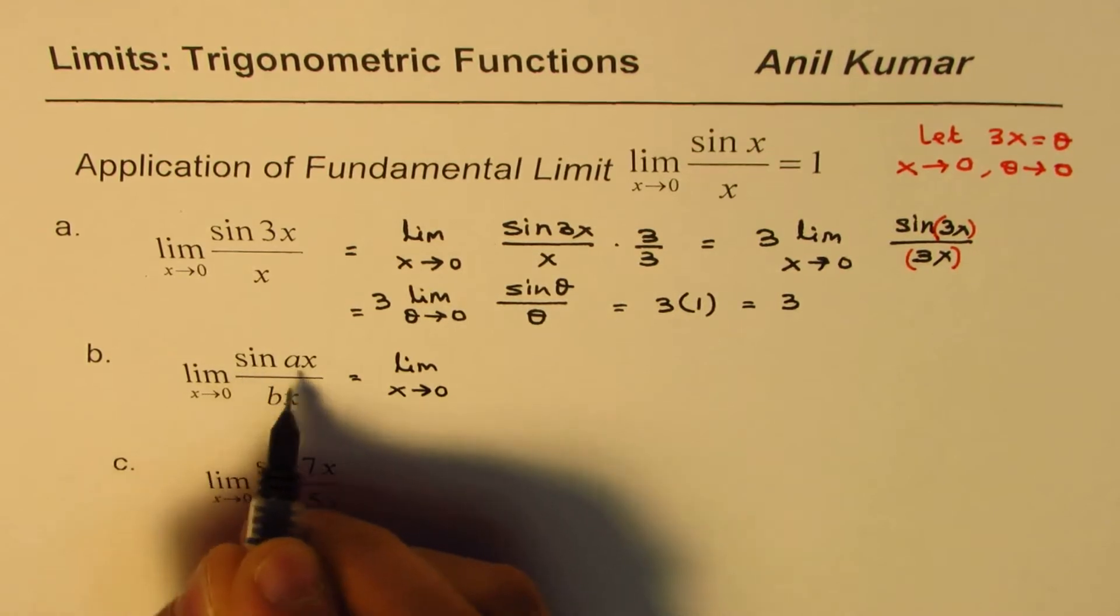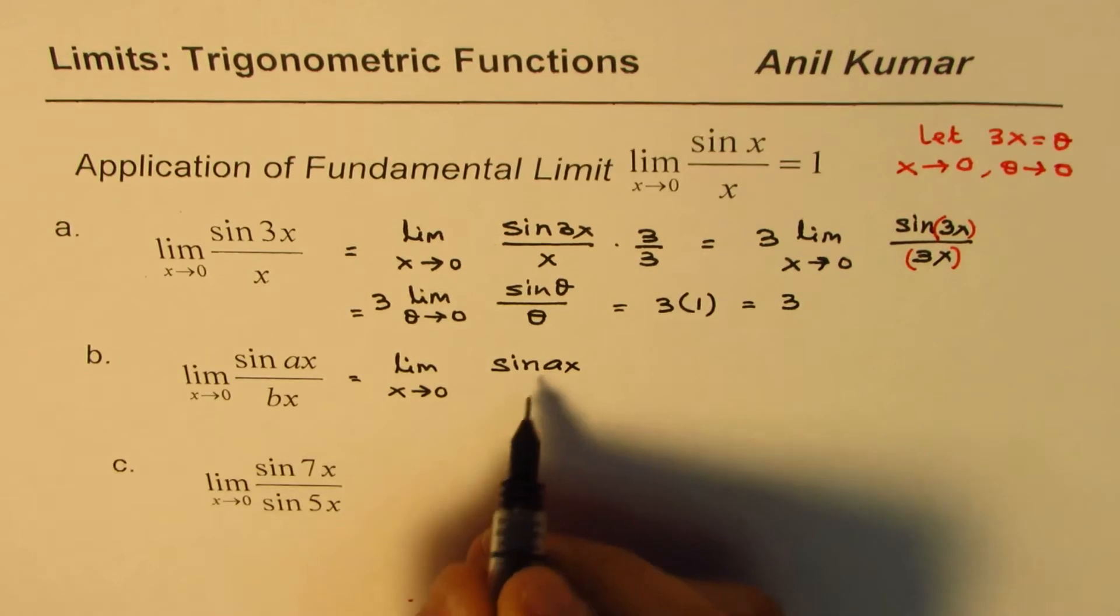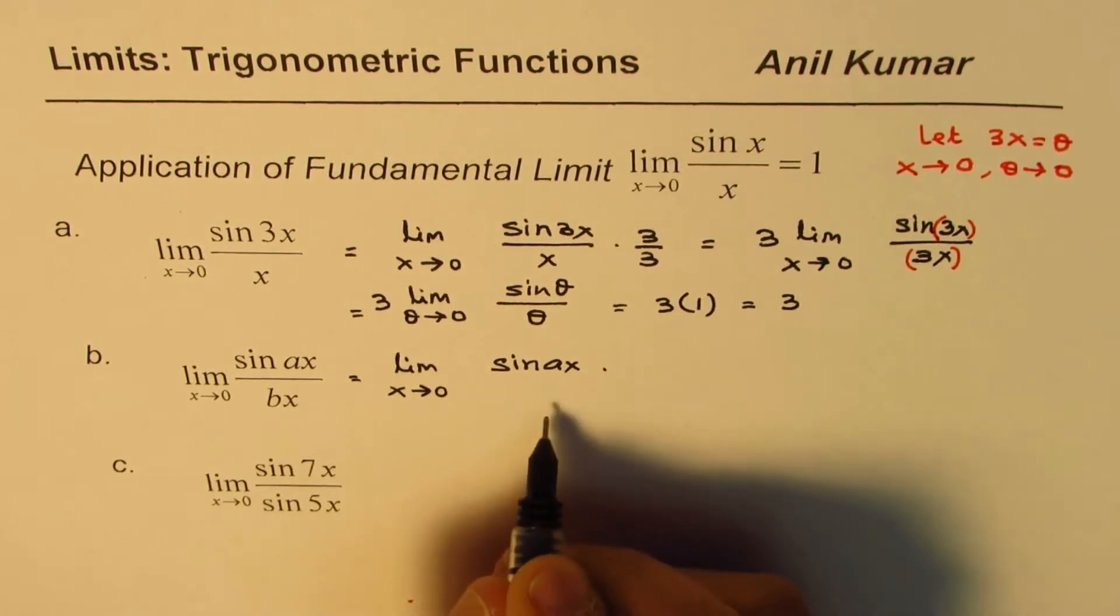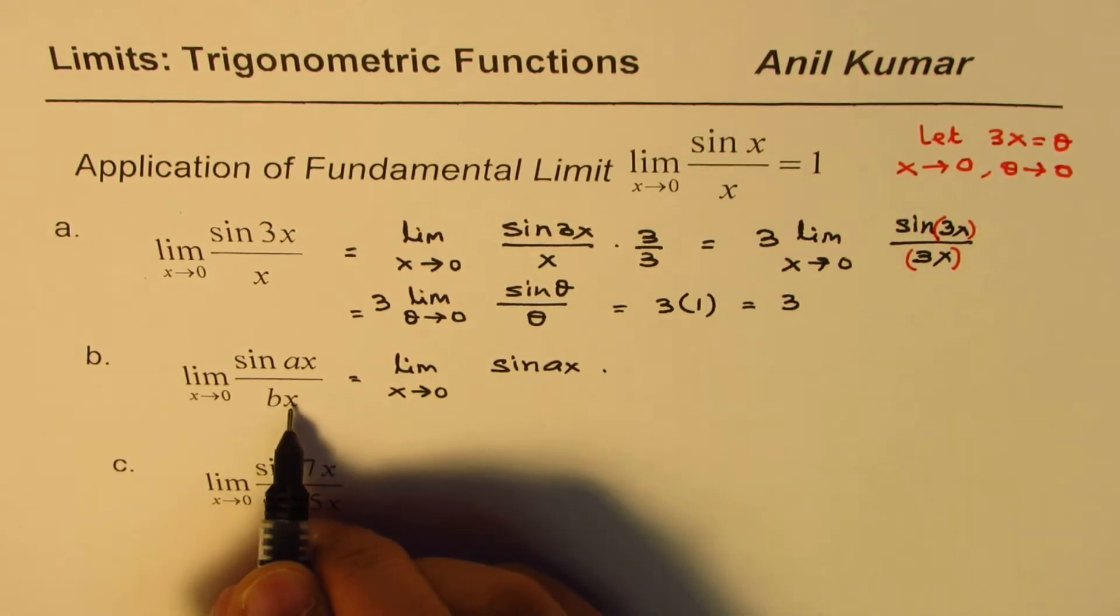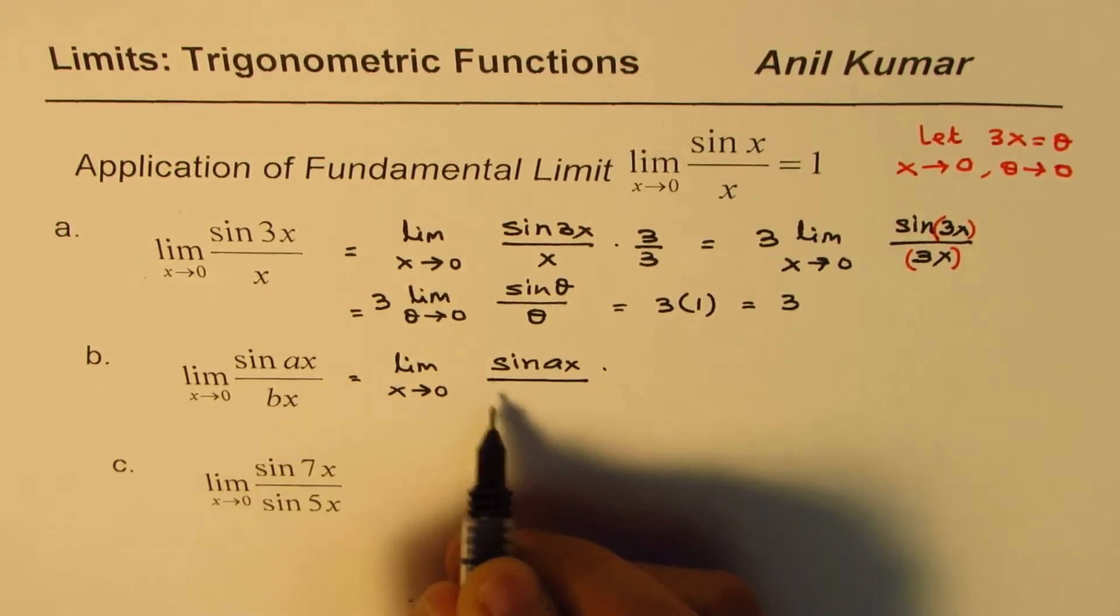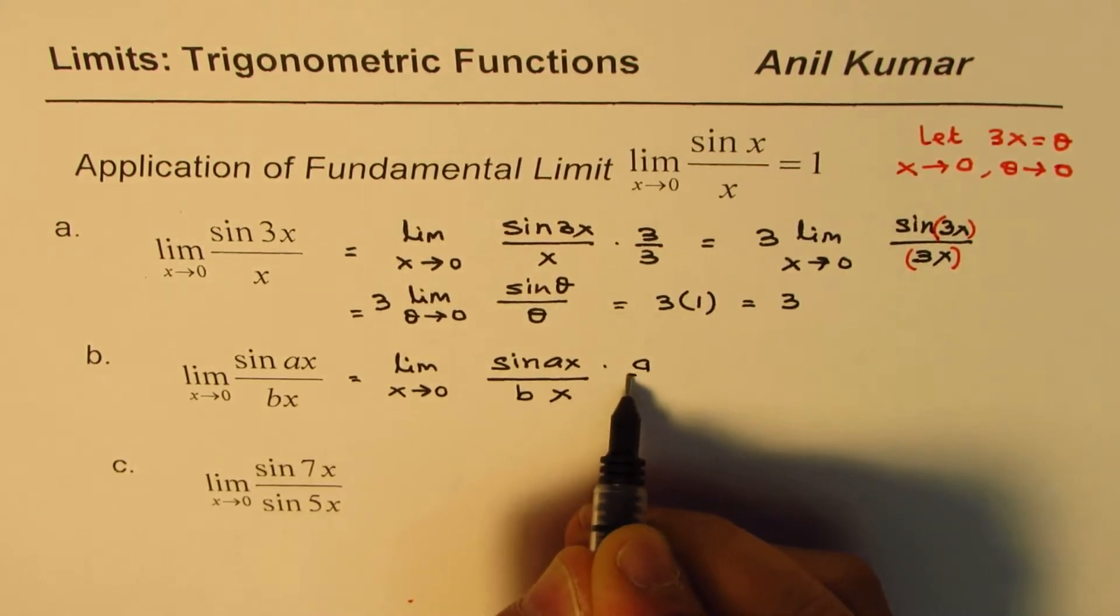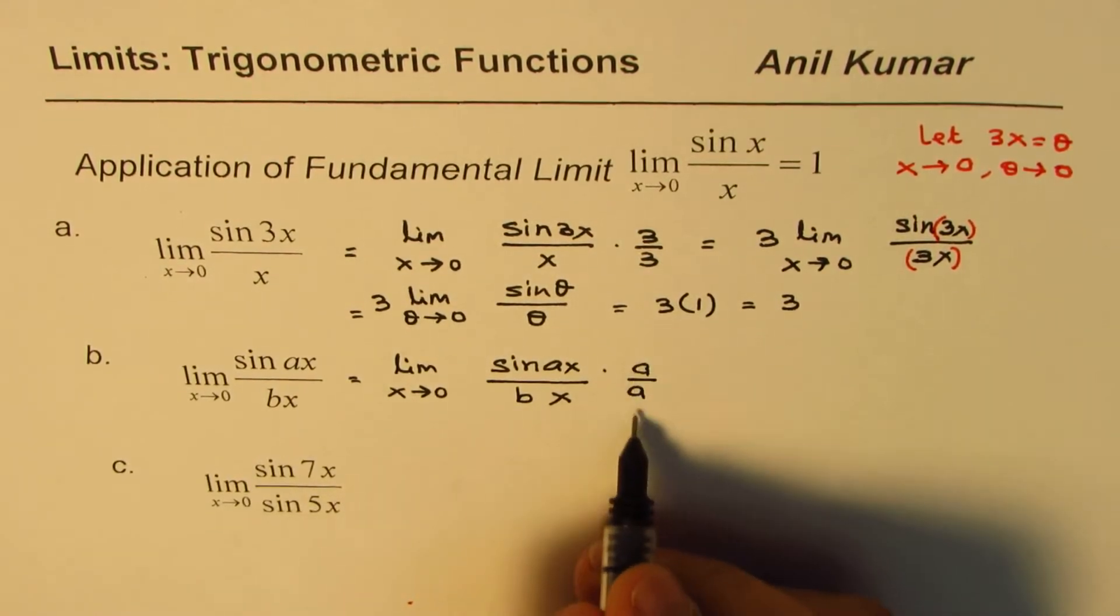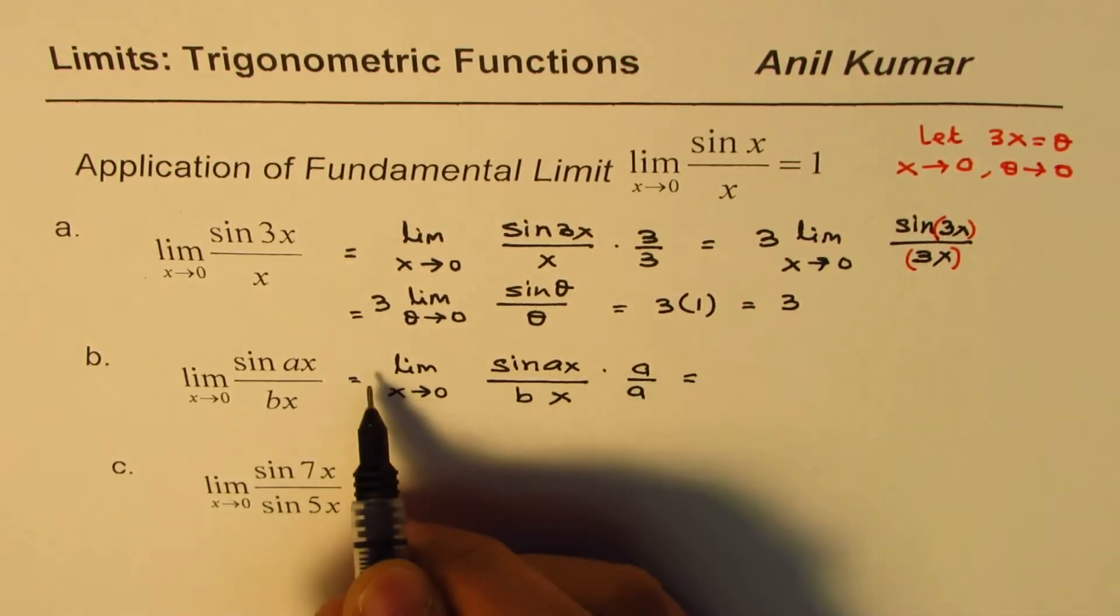So we are going to do the second part as the limit x approaches 0. We have sin ax. I need ax in the denominator. So I can multiply this. I have bx in the denominator. So I already have x. I don't have a in the denominator. So let me rewrite this. I could multiply and divide by a. So I should say multiply and divide by a. So that is what I've done.